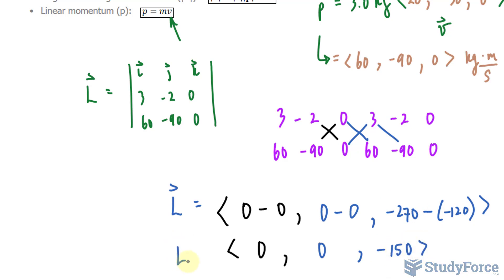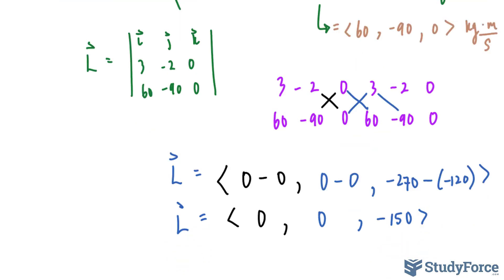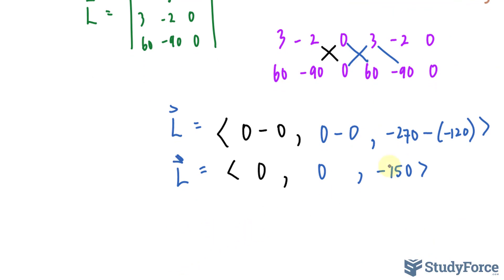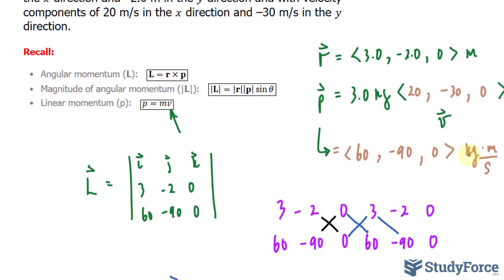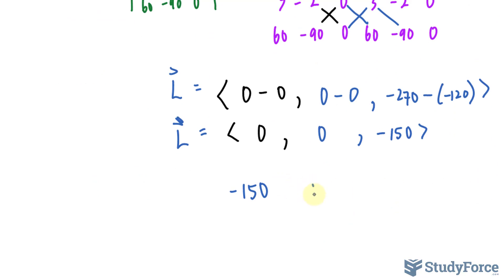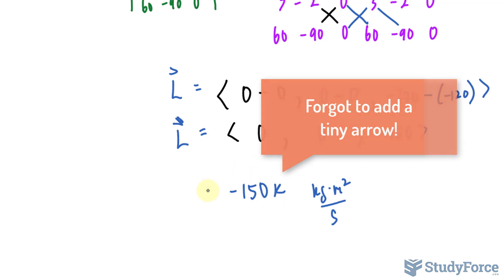This means the angular momentum will only have a z component, which is negative 150. The units for angular momentum, since we are multiplying kilograms times meters per second times meters, will be kilograms times meters squared per second, shown with a k, the unit vector for the z component.